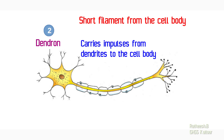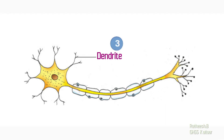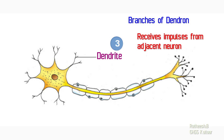The next important part of a neuron is dendrite. Observe the dendrite in this picture. These are the branches of dendron. The function of dendrite is to receive impulses from adjacent neurons.